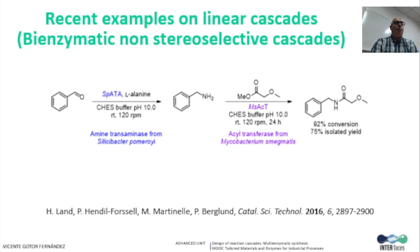In the first example, a bi-enzymatic approach is reported for the synthesis of an amide from the corresponding aldehyde, consisting of a first biotransamination step catalyzed by a transaminase, and a reaction between the benzylamine with an ester such as methyl ethoxyacetate using an acyltransferase. To avoid competition between the amine donor and benzylamine in the acyltransferase reaction, L-alanine was selected instead of commonly used isopropylamine, since the acyltransferase does not recognize amino acids as substrate. Therefore, L-alanine can be used in excess to shift the equilibrium of the first step. After optimization, the concurrent cascade yielded N-benzyl-2-methoxyacetamide at 92% conversion and 75% isolated yield.